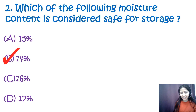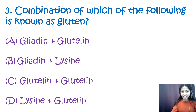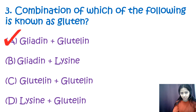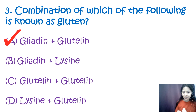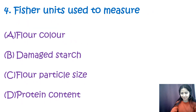Question 3: The combination of which of the following is known as gluten? Options are gliadin and glutelin, gliadin and lysine, glutalin and glutalin, and lysine and gliadin. The correct option is A — gliadin and glutelin. Gluten is a structural protein found in cereal grains, and it refers to the combination of gliadin and glutelins.